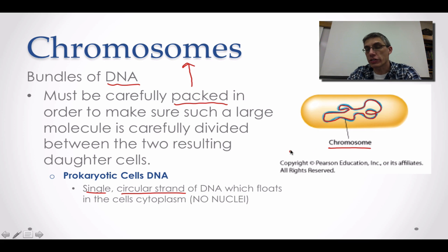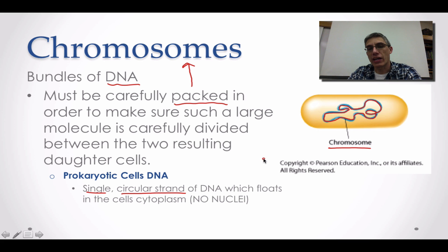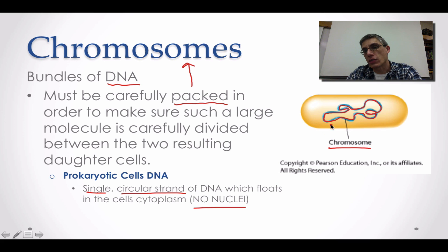Our textbook still uses the word chromosomes even when referring to prokaryotic cells. Remember, one of the big differences between prokaryotic and eukaryotic cells is that prokaryotic cells do not contain nuclei. So that circular strand of DNA is not surrounded by a membrane — it is not a membrane-bound organelle.